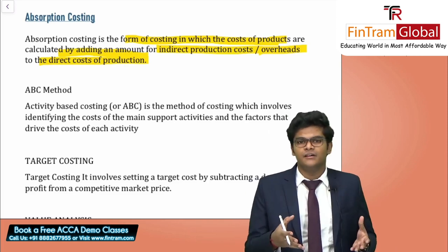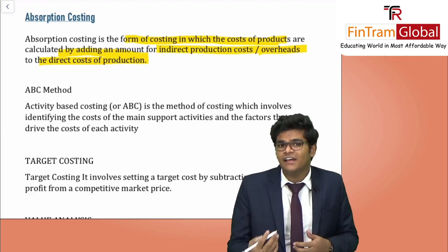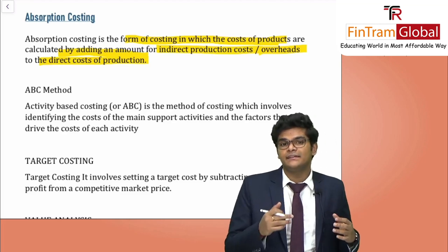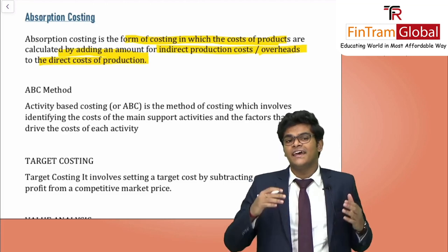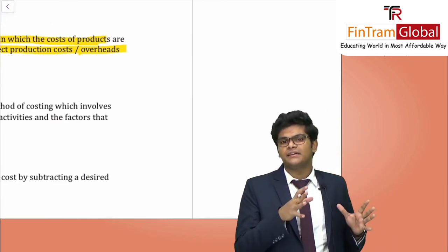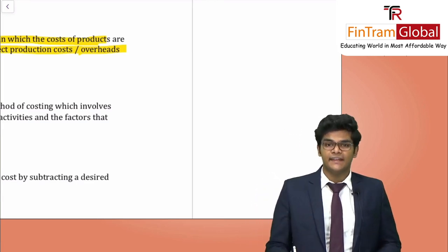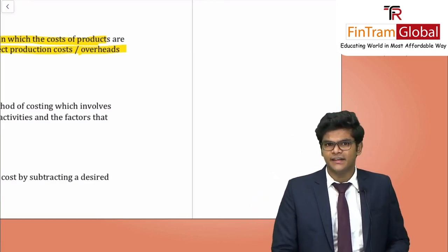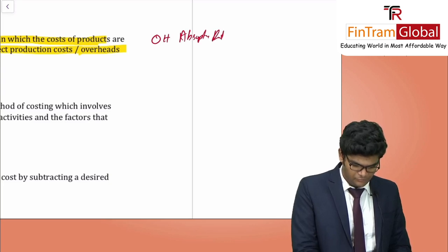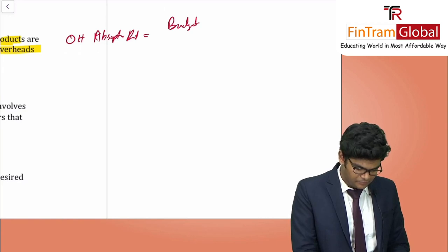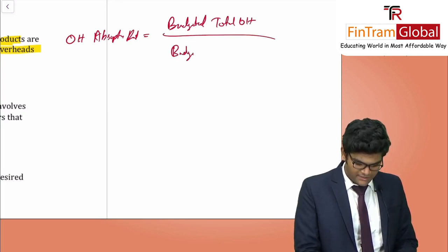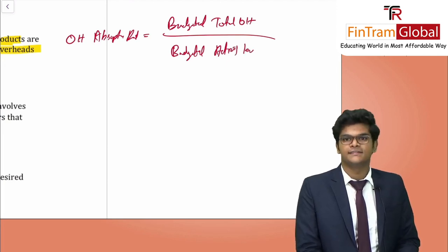In absorption costing, we apportion indirect costs to each unit of output. The Overhead Absorption Rate (OAR) is calculated as: Budgeted Total Overheads divided by Budgeted Activity Level. The budgeted activity level can be number of units, machine hours, or labour hours.